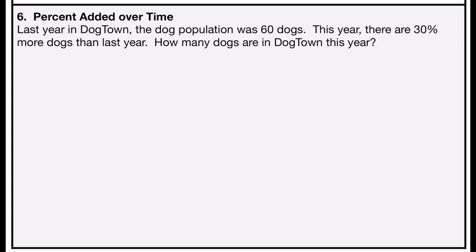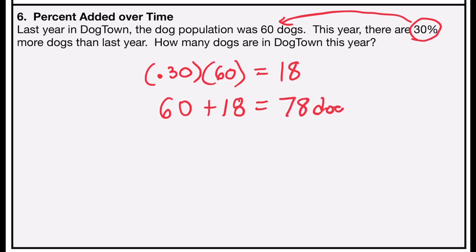Problem number six deals with percent added over time. It says last year in Dogtown, the dog population was 60 dogs. This year, there are 30% more dogs than last year. How many dogs are in Dogtown this year? So first, I'm going to have to find 30% of the original number of 60 dogs. Similar multiplication to what we've been doing in the other problems, I'm going to take 30% written as a decimal, 0.30, and multiply it by the original amount of 60 dogs. 0.30 times 60 is 18. So that means there's an increase of 18 dogs. So all I have to do is add that to the original 60 dogs plus 18 more dogs this year, and 60 plus 18 will give me 78 dogs in Dogtown this year.